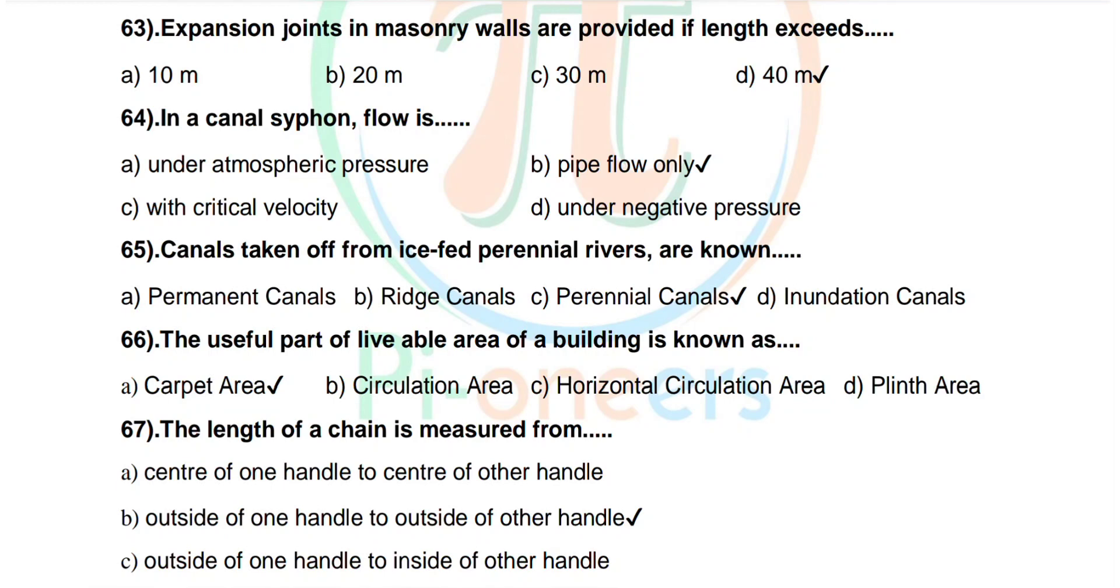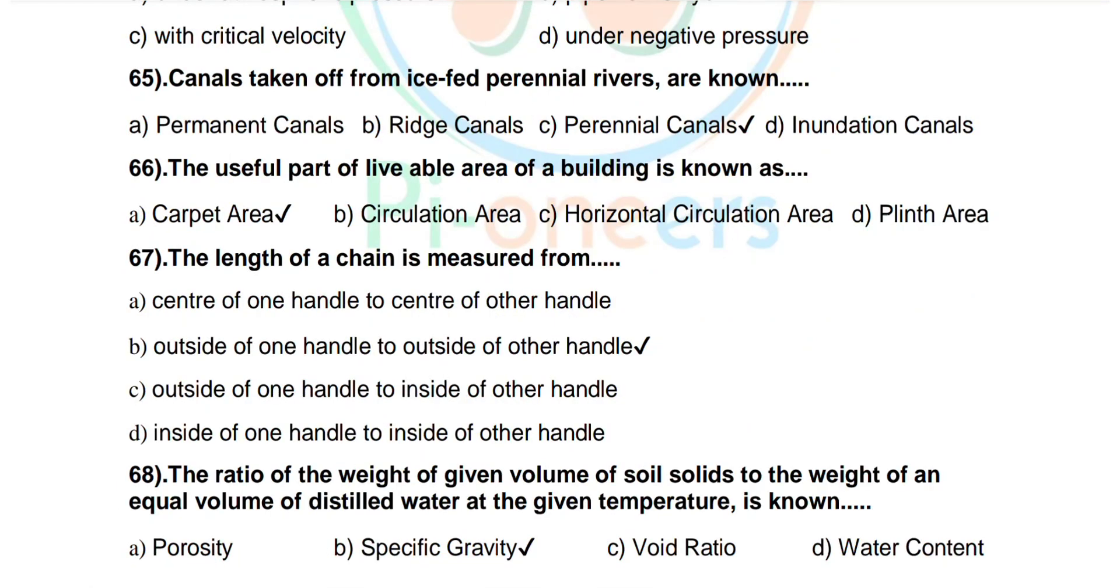Question number 65: Canals taken off from ice fed perennial rivers are known as perennial canals. Question number 66: The useful part of livable area of a building is known as carpet area.